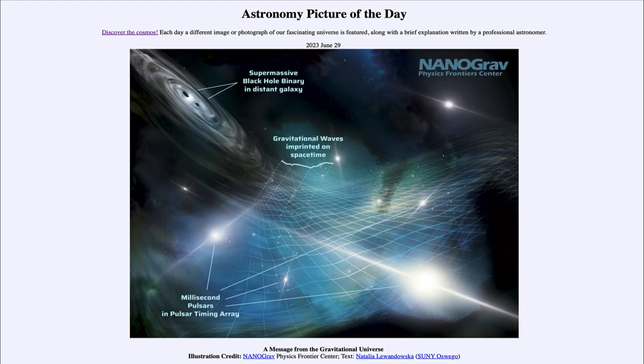And when they merge together, that's what we are able to detect with things like LIGO and the Virgo detectors that can detect those high frequency gravitational waves.